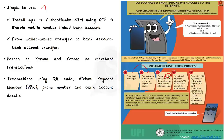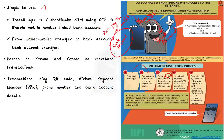Before UPI, around 2015, we had Paytm. With Paytm, you had to load a wallet from your bank account, send money to the receiver's Paytm wallet, and then the receiver had to transfer that money back to their bank account — a tedious process. UPI simplified this by allowing direct transfer from one bank account to another, enabling person-to-person and person-to-merchant transactions seamlessly.